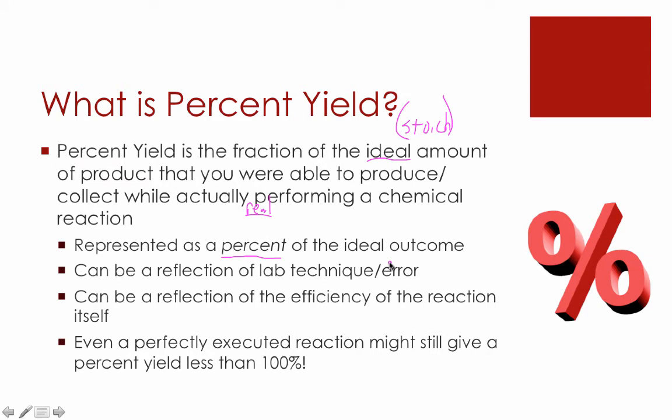And it can be used as a reflection of lab technique or error, meaning this is something we can discuss during lab reports. It can also be a reflection of the efficiency of the reaction itself, meaning that even if you were perfect in the actual experiment, you still might not get a yield of 100%. Some reactions are just a little bit stubborn about proceeding to product, and as a result, they always produce less than 100% yield, regardless of how careful you actually are.